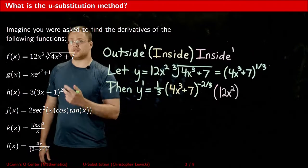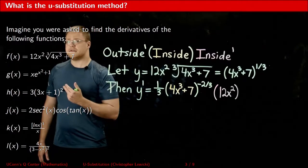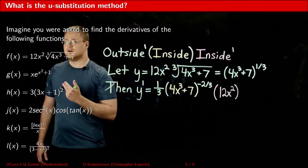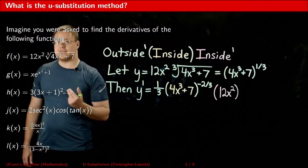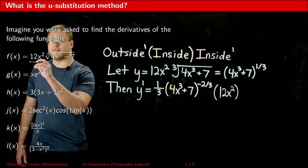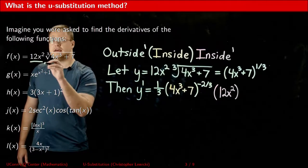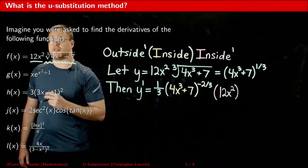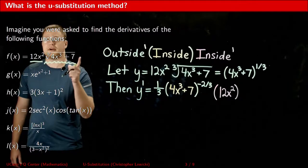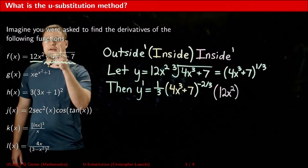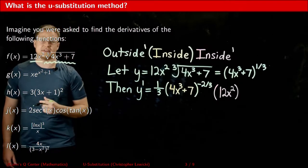Imagine you were asked to find the derivative of each of these functions. Taking a look at the first one, this is going to need both the product rule and the chain rule. We have a function multiplied by another function, which is where the product rule comes in. And the chain rule comes in because in order to take the derivative of this particular function, we're going to need it.